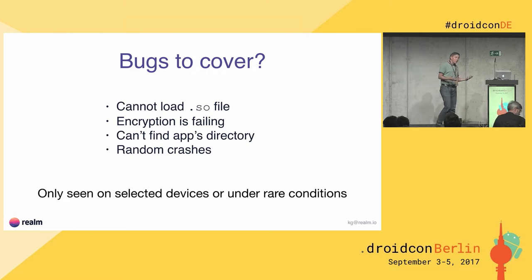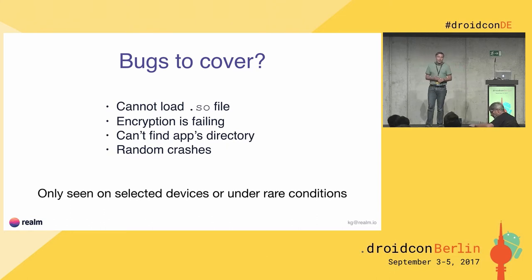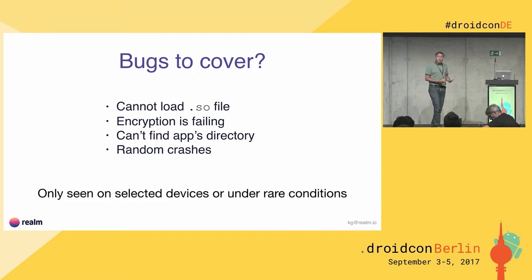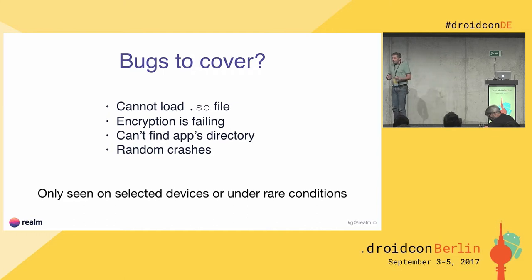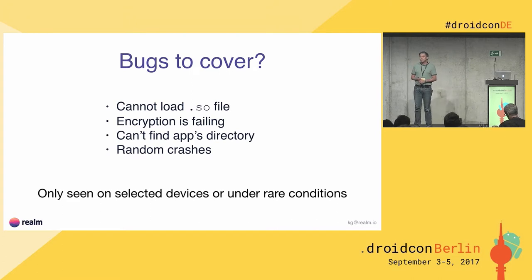Then we have a case where our encryption — Realm supports encryption — was failing for some reason on a few devices. I'll go through why that happened. I can give you a little hint: Google fixed it really quickly because they made a bug. Then, when you have a context and want to find the app's directory so you can write files, there is a method for that on the context, but sometimes an app cannot find that directory. I'll go through when that happens and what you can do about it.